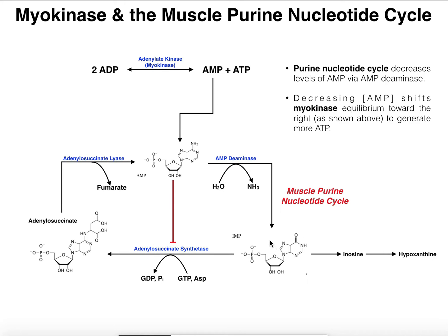So IMP, at least at the time of exercise, really has one option: to go into its degradation pathway. IMP can be degraded initially to inosine, then hypoxanthine, and then further into uric acid. Essentially, IMP will just be degraded. What that leads to is a net reduction in adenosine monophosphate. There's not going to be a lot of cycling going on because the high AMP levels building up during exercise are going to inhibit adenylosuccinate synthetase, so IMP produced from the deamination reaction mainly undergoes degradation.